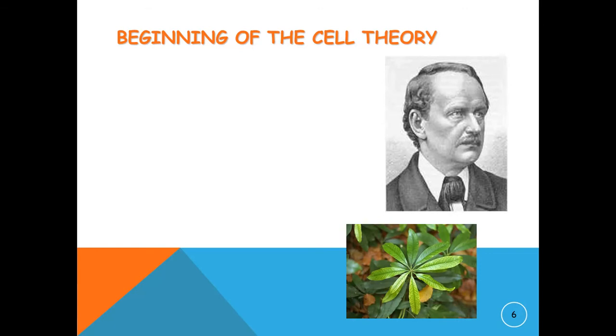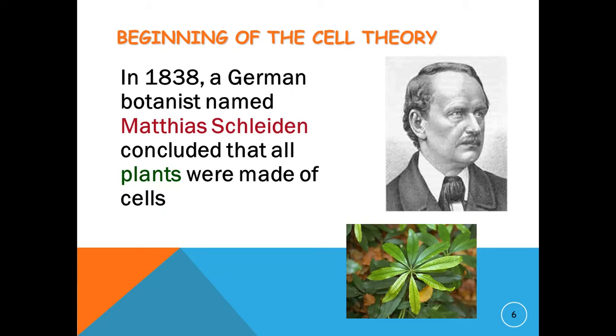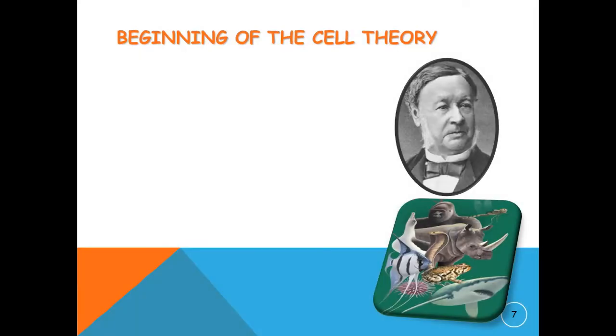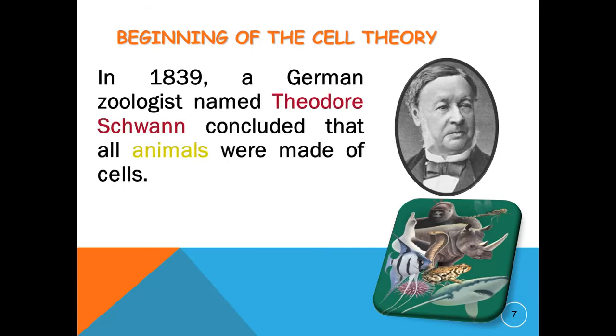How did the cell theory begin? In 1838, a German botanist named Matthias Schleiden concluded that all plants were made up of cells. Schleiden is a co-founder of the cell theory. In 1839, a German zoologist Theodore Schwann concluded that all animals were made up of cells. Schwann also co-founded the cell theory.